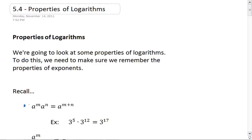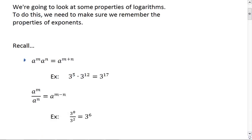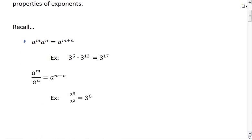So remember that if we have the same base, so a to the m times a to the n, that's equal to a to the m plus n. The reason that works is, let's look at this example. 3 to the 5th times 3 to the 12th. Well, 3 to the 5th means repeatedly multiplying by 3 five times.